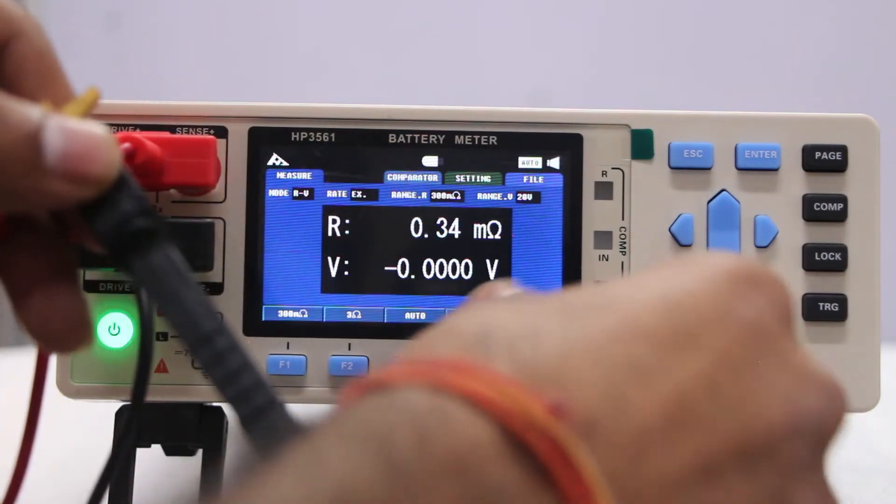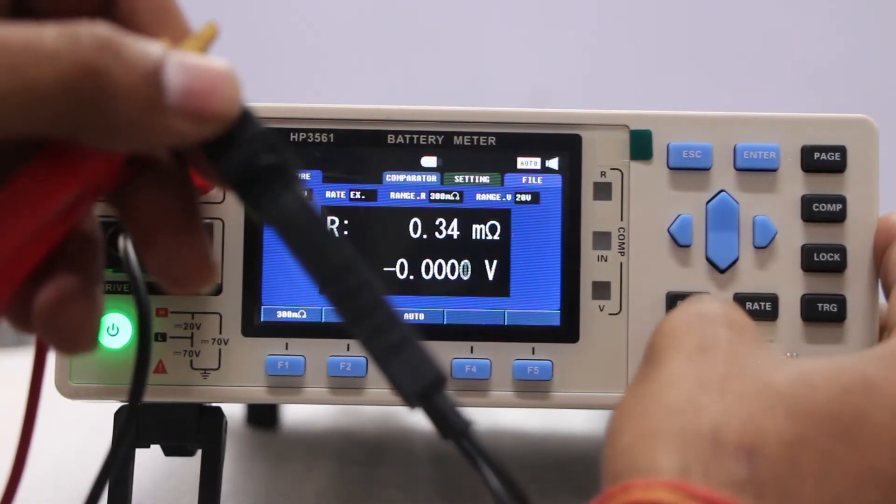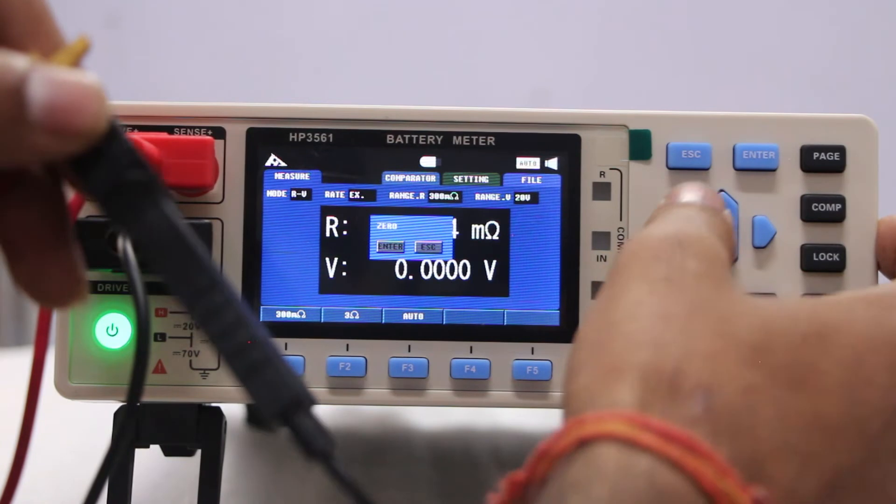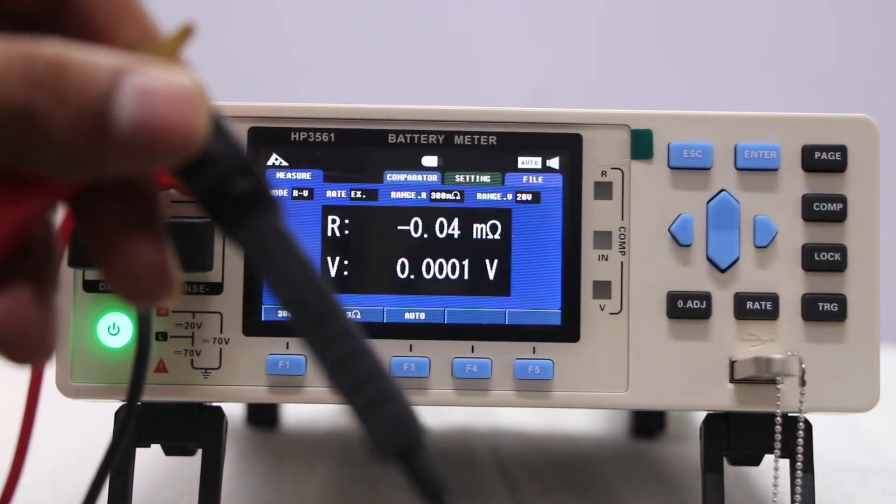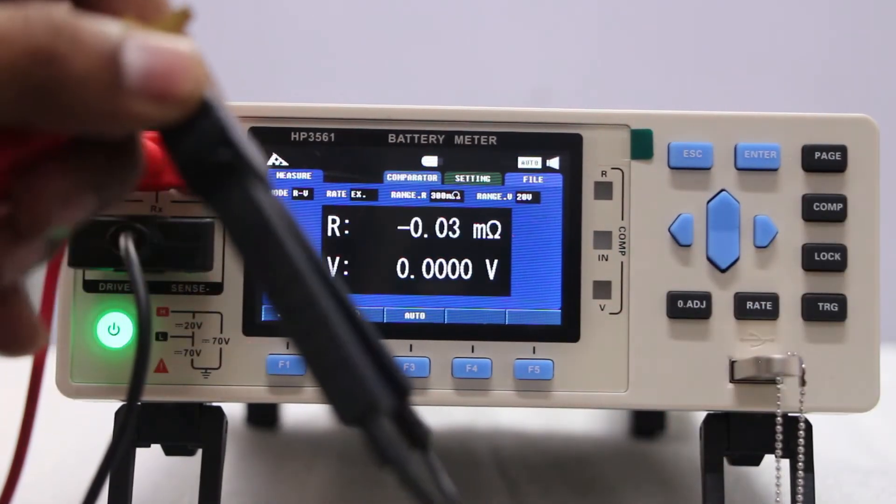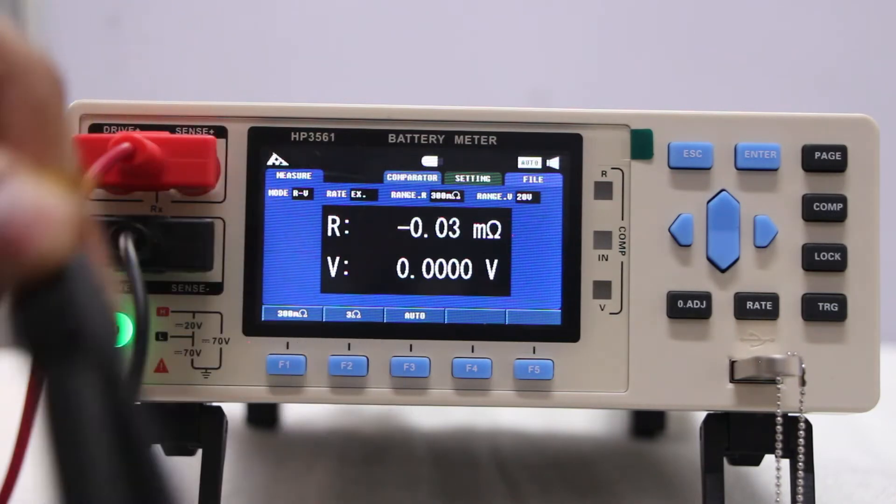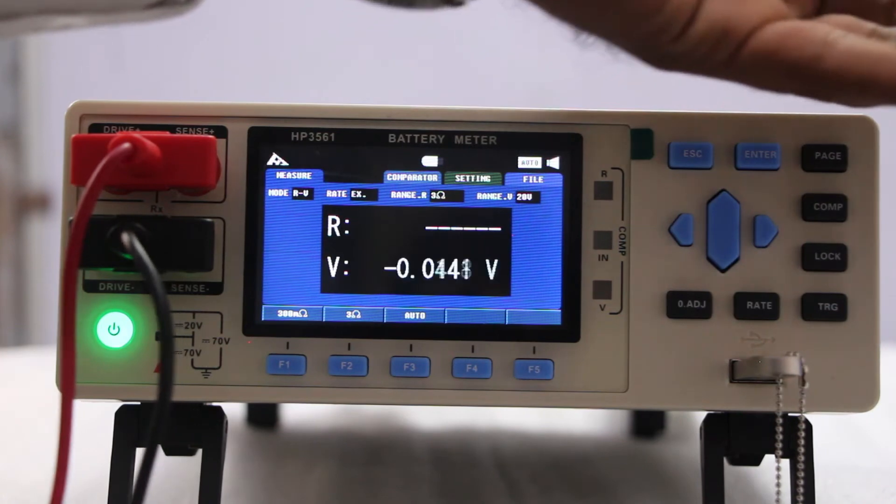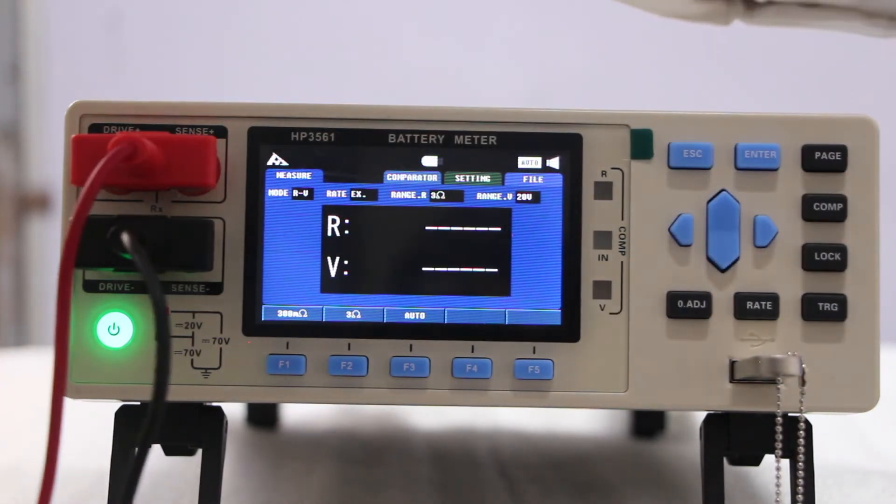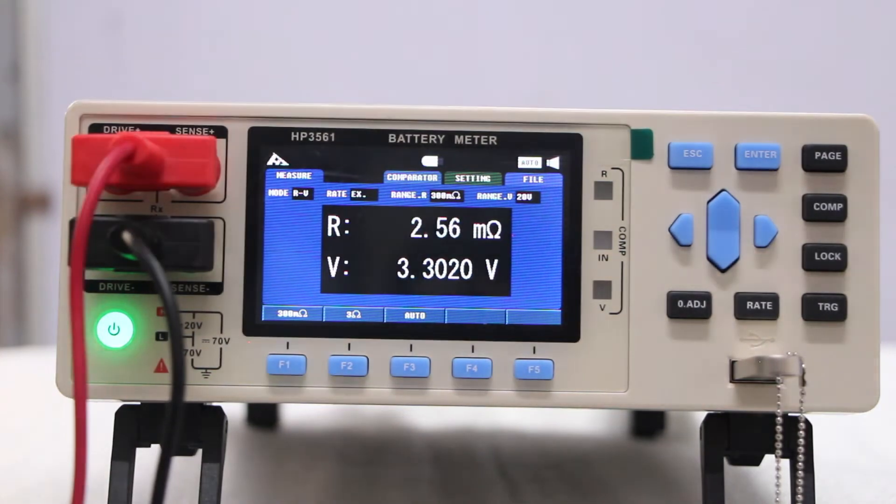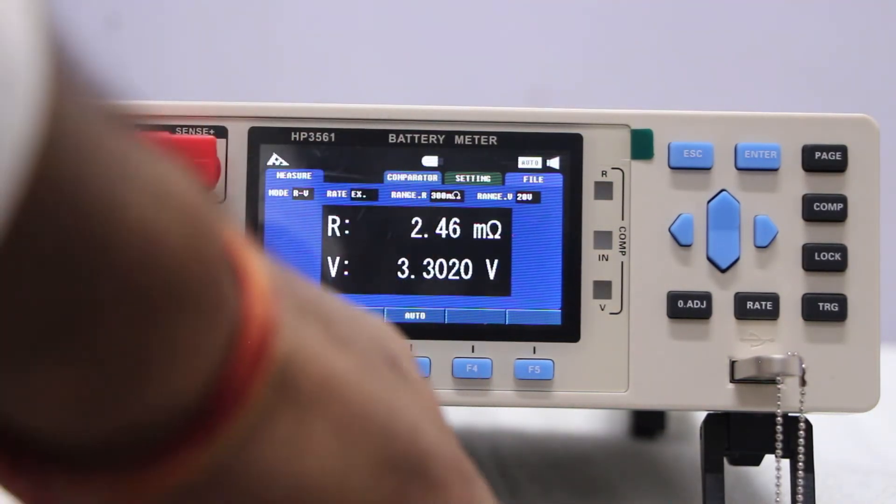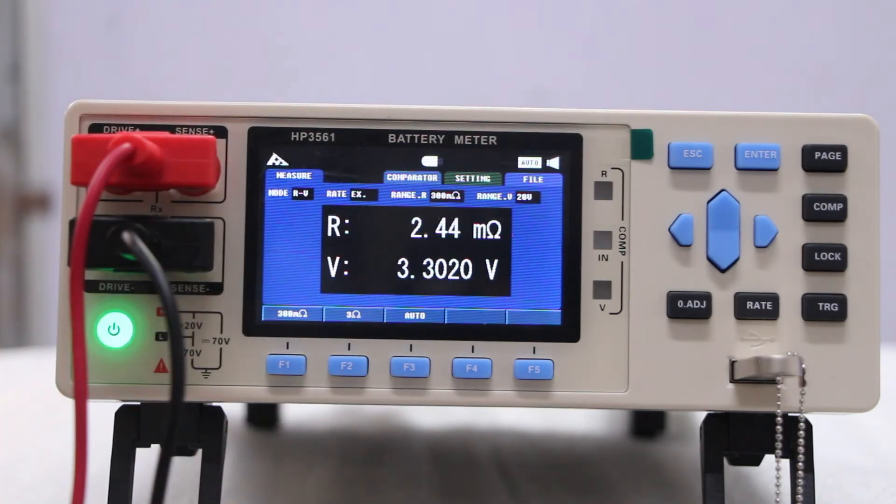You will short your positive and negative probe. So that the total IR will be zero and at that time you can just enter zero adjustment to make it zero. Zero adjustment is basically used for your calibration purpose.